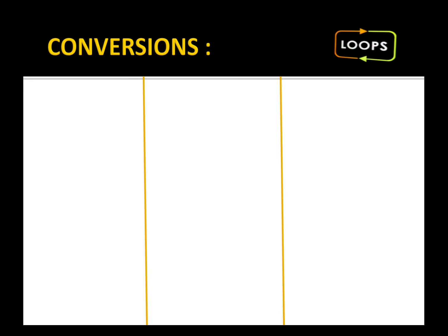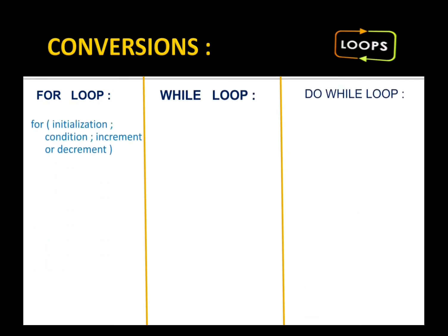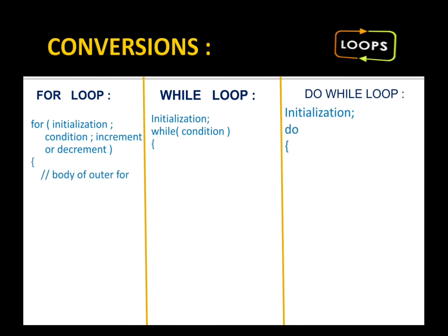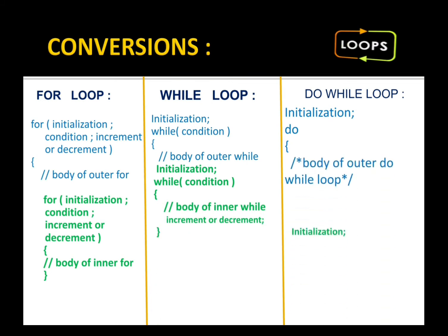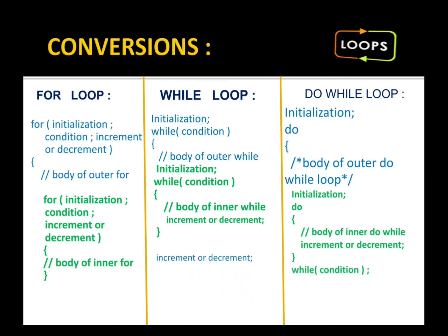Now conversions of for, while, and do-while. The outer for loop has initialization, condition, and the body starts. Inside the for we can have another for, a while inside while, or a do-while inside do-while. The increment/decrement of the outer loop is written, and then all loops are closed one by one.